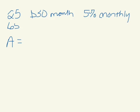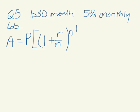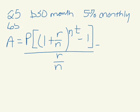The formula that you want to use is the second one listed on the page, because the first one is only if it's compounding annually. P is your principal, how much you start off with. You start off with $30 a month. Your interest rate is 5%.